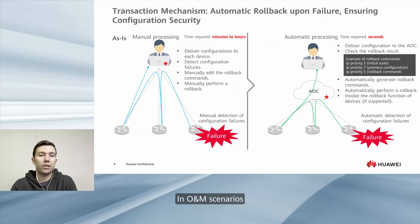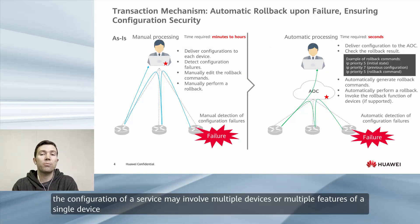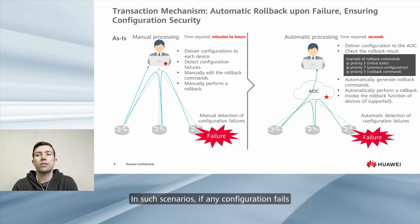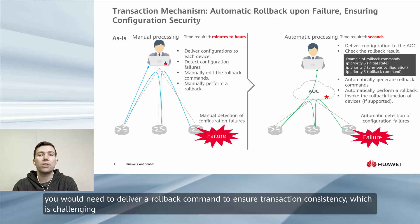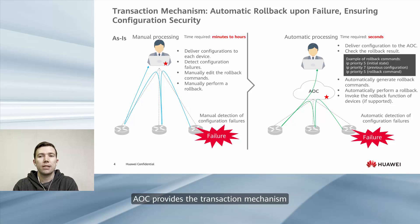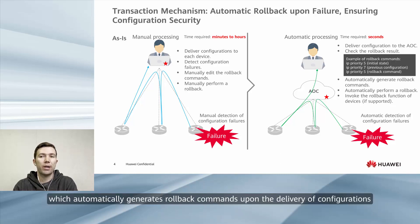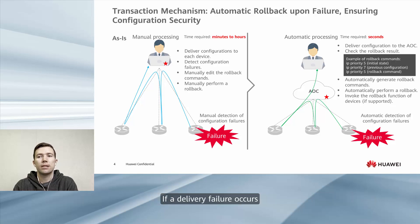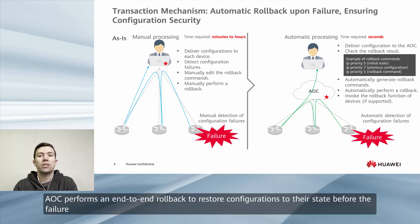In O&M scenarios, the configuration of a service may involve multiple devices or multiple features of a single device. In such scenarios, if any configuration fails, you would need to deliver a rollback command to ensure transaction consistency, which is challenging. AOC provides a transaction mechanism which automatically generates rollback commands upon the delivery of configurations. If a delivery failure occurs, AOC performs an end-to-end rollback to restore configurations to their state before the failure.